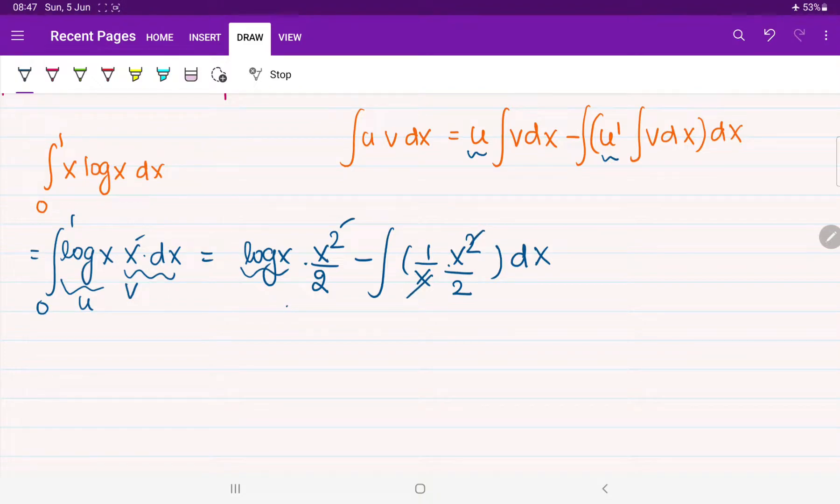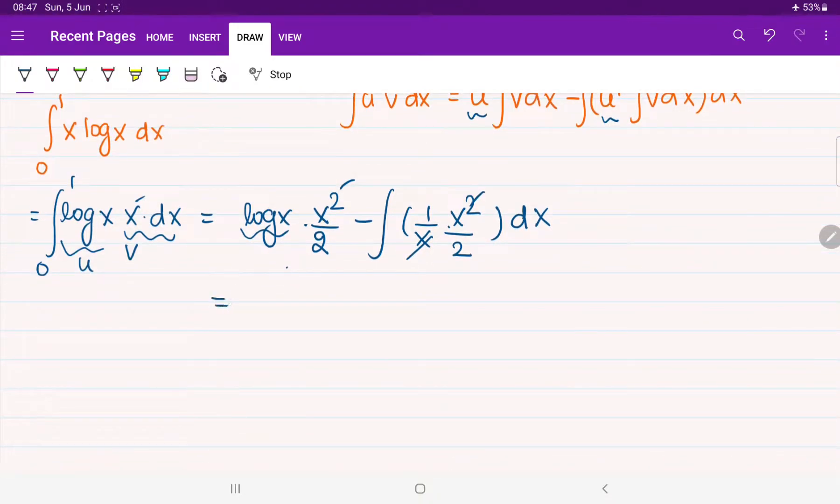Now, 1 by x will get cancelled out. After that, what you will be observing? This function will give you, here, we are going to observe log x dot x power 2 by 2 minus. 1 by x will get cancelled, still we have 1 by 2 is constant, integration of x, 1 by x is sliced with respect to x, that will also give you x square by 2.